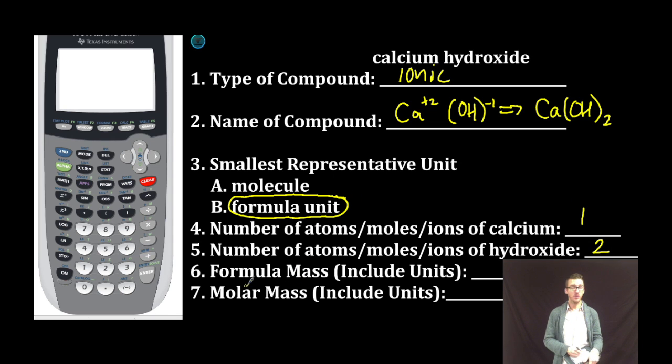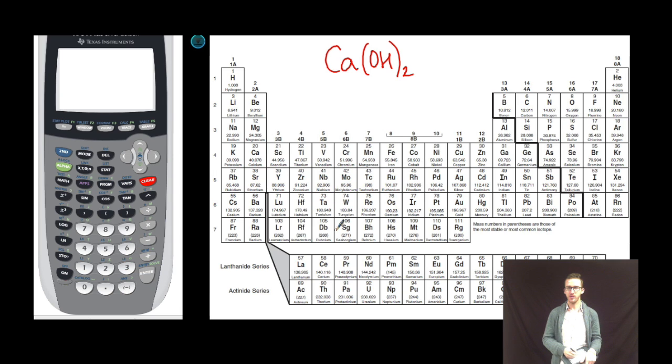Now, let's talk about formula mass and molar mass. Quick jump to my periodic table. You may find it helpful when you're working with compounds that involve polyatomic ions to write it out to help you better identify how many of each element you're working with. This little subscript of 2 implies that I've got 2 hydroxides.